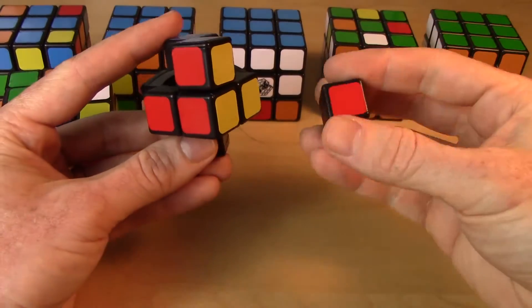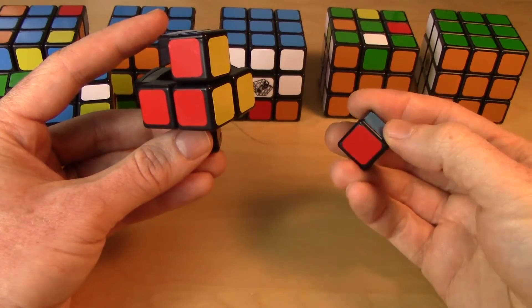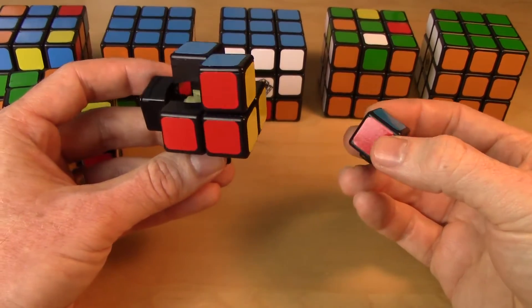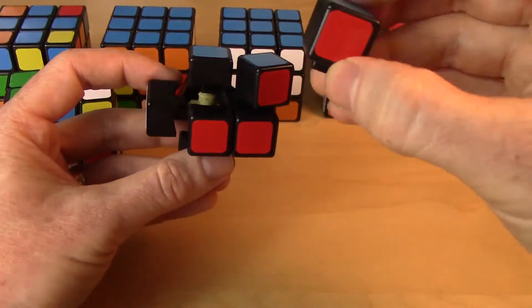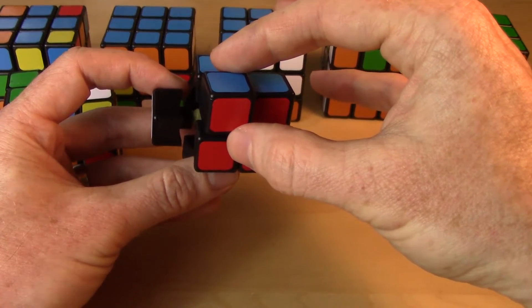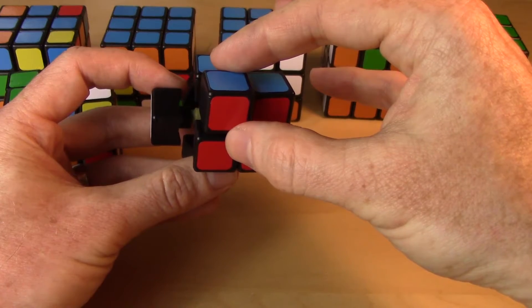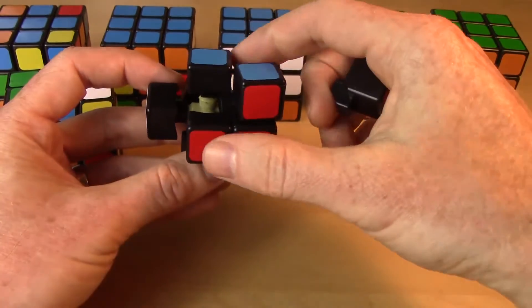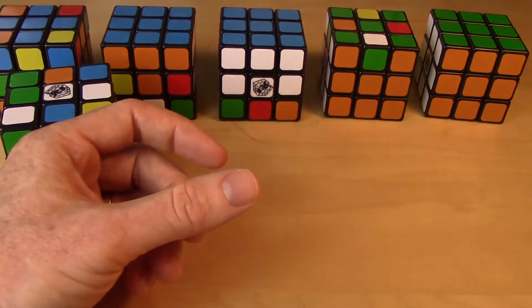So if I look at this next piece here, this is a blue, red edge piece. Where does it have to go? Well it's got to eventually end up touching the blue and the red center pieces. So that's its final location. So that's the anatomy of the cube.